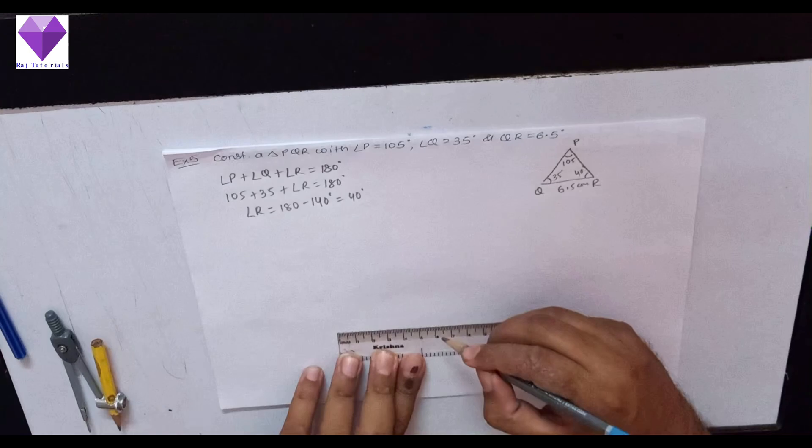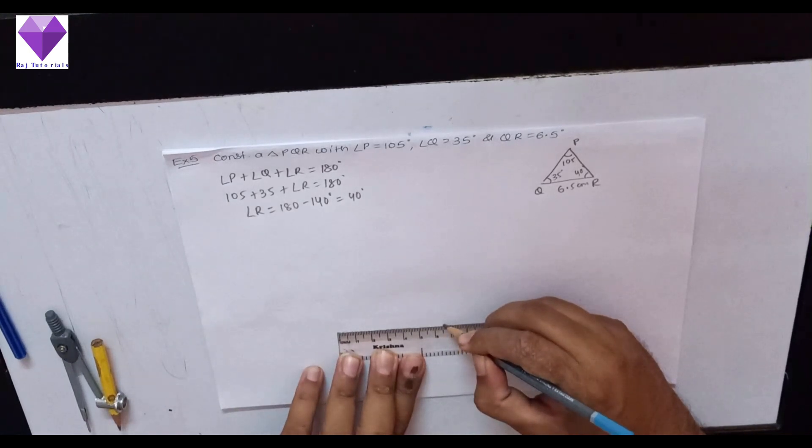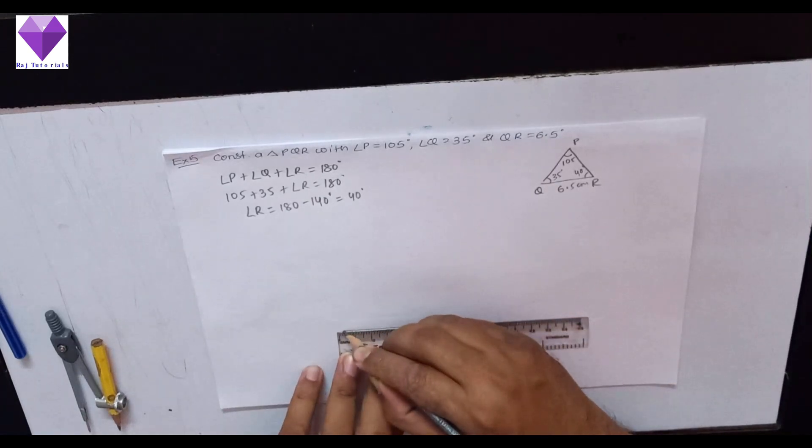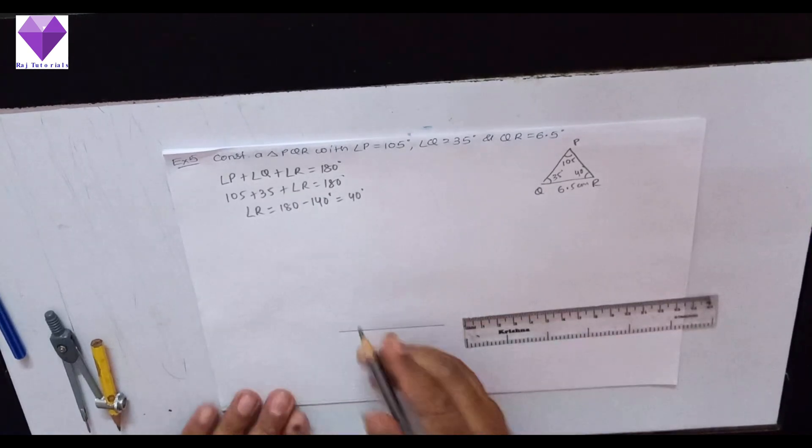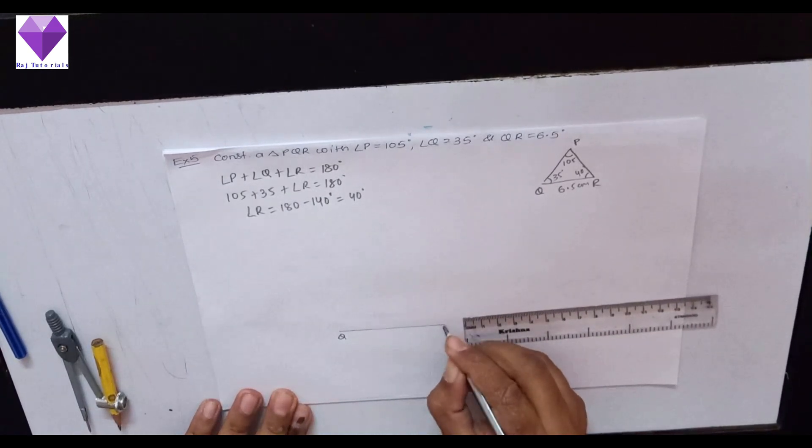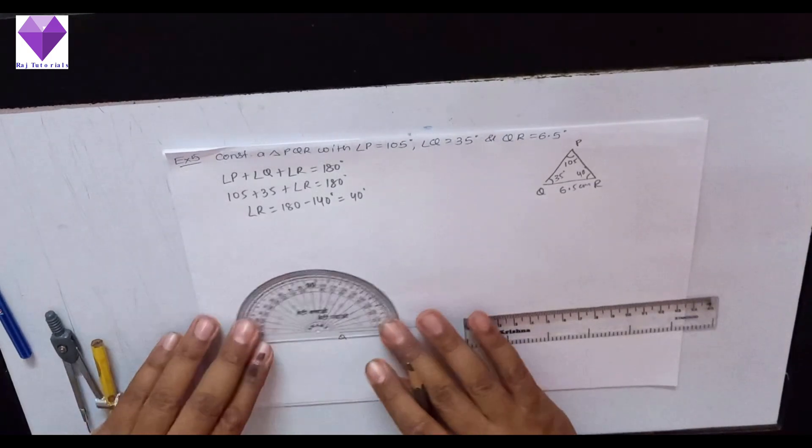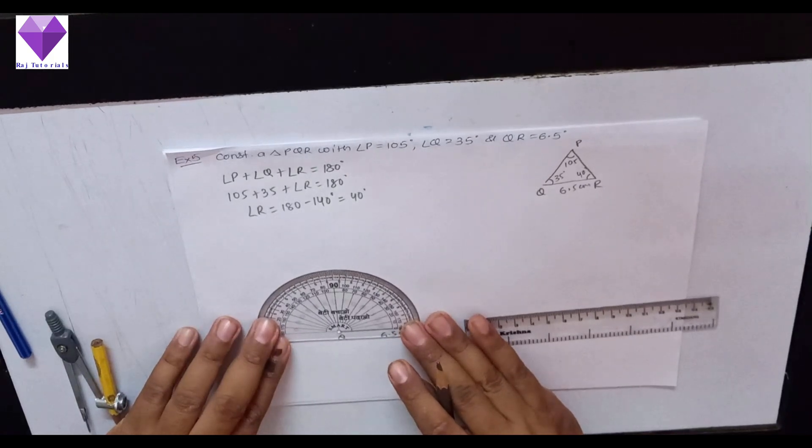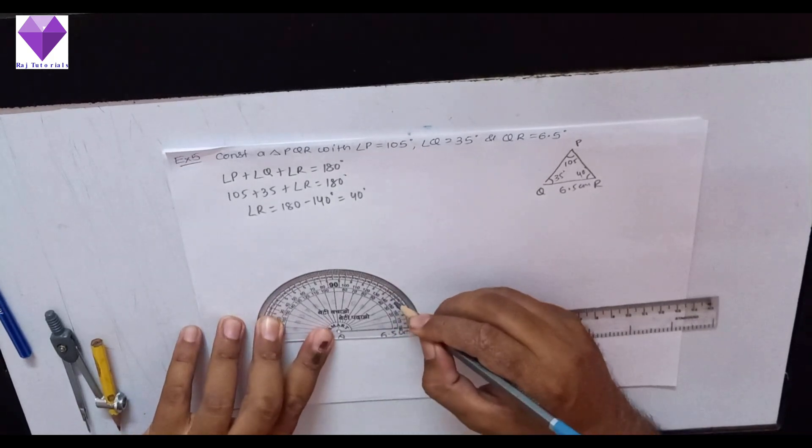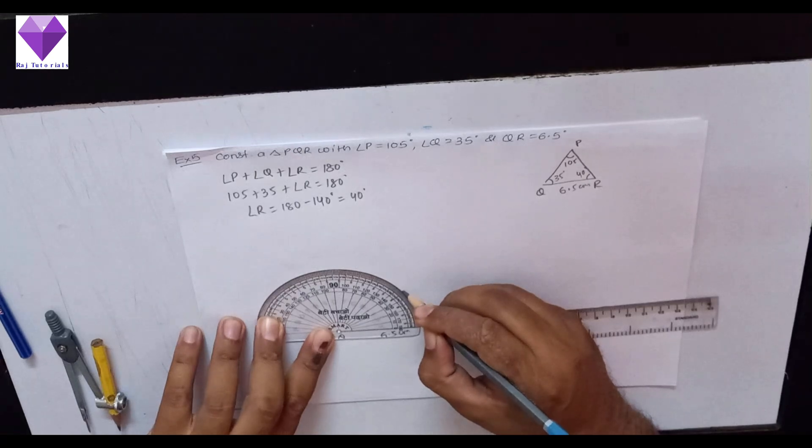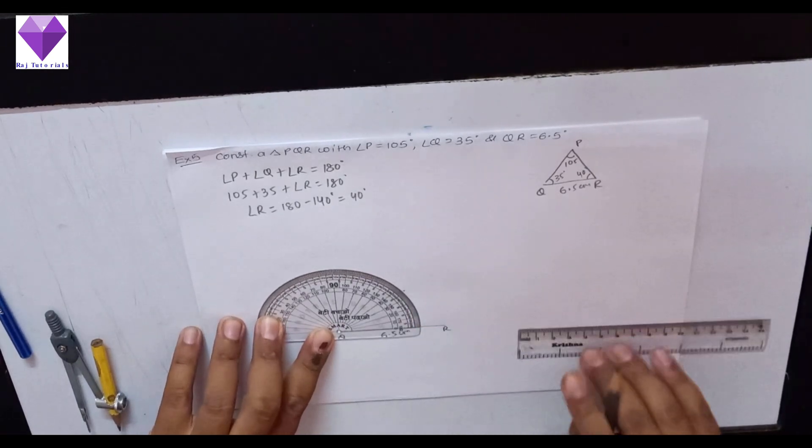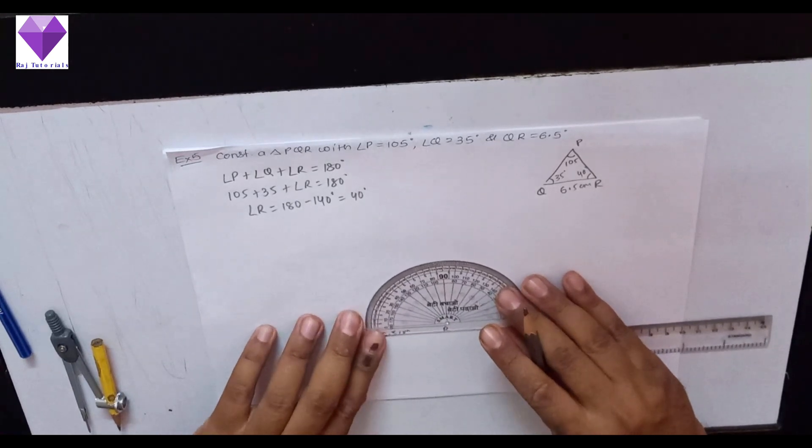I am drawing a 6.5 cm base, QR equals 6.5 cm. Now, at Q I will draw 35 degree angle and at R I have to draw 40 degree angle.